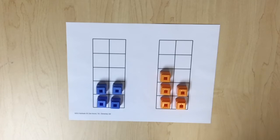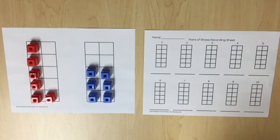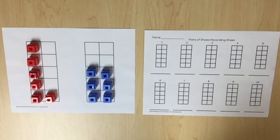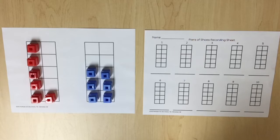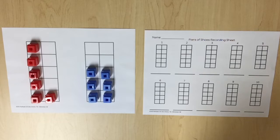Students will use linking cubes to determine whether numbers are even or odd up to the number 10 while reading the Pairs of Shoes story. Students should use linking cubes in a 10 frame to represent each number from the story, creating as many pairs of linking cubes as possible for a given number, rather than placing them in some other arrangement.